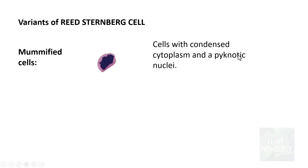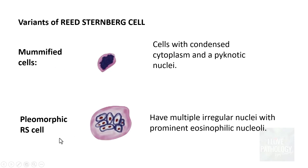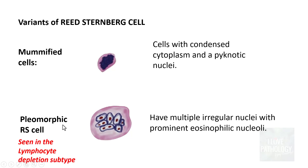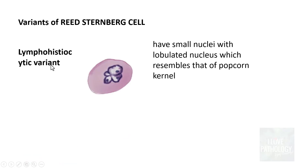The third variant is the mummified cell, which has condensed cytoplasm and pyknotic nuclei. There is also a pleomorphic Reed-Sternberg cell variant, which has multiple irregular nuclei with prominent eosinophilic nucleoli. This pleomorphic variant is seen in the lymphocyte depletion subtype.